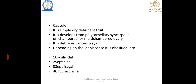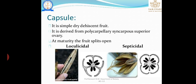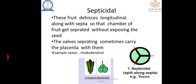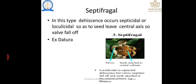Capsule dehiscence types: Loculicidal — the capsule dehisces along the longitudinal line between sutures, opening the chamber; placenta remains attached and seed comes outside. Septicidal — the fruit dehisces longitudinally along the septa so the chambers get separated without directly exposing the seed; the placenta or septa come outside. Septifragal — dehiscence occurs like septicidal or loculicidal but the seed remains on the central axis while the fruit wall breaks open.